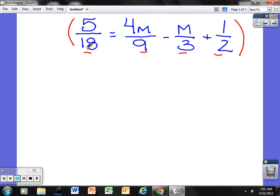Now in this case it's not bad. Least common multiple of 18, 9, 3, and 2 is 18. So what happens here is you're actually going to multiply each fraction by 18 and I'm just going to put 18 over 1.